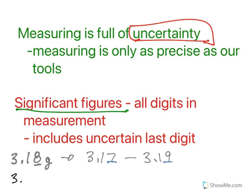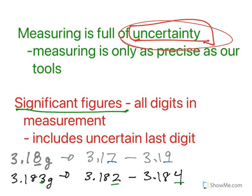Or if we say 3.183, let's take it to the thousandths place, that means we're a little bit between 3.182 and 3.184, right? Again, paying attention to that last digit. So significant figures are dealing with digits in measurement that help us deal with the uncertainty of measurement.